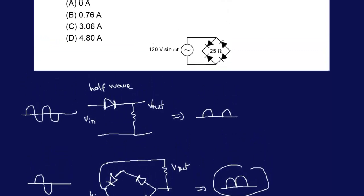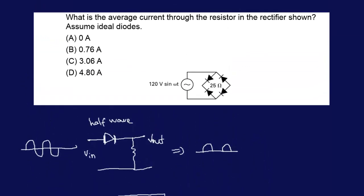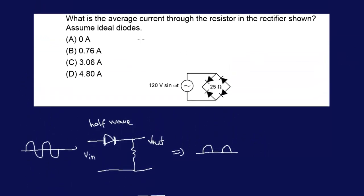If you read the problem correctly, the question is to find the average current. Average current equals average voltage divided by resistor. The resistor is given, but we don't have the average voltage. We have the maximum voltage, not the average voltage. So we have to find the average voltage.